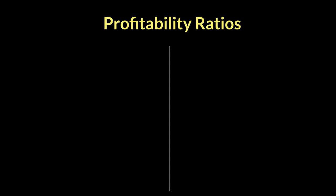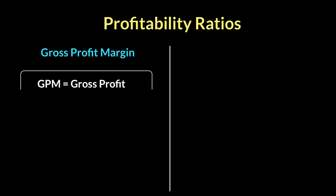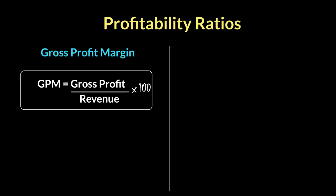We're going to look at two profitability ratios. The first is called your gross profit margin. You'll remember gross profit from the income statement: revenue minus cost of sales, which are your direct costs, gives you your first profit checkpoint — gross profit. Gross profit margin is the ratio applied to that gross profit. The formula is: gross profit margin equals gross profit divided by revenue, multiplied by 100. This is always a percentage — gross profit margin is always a percentage.